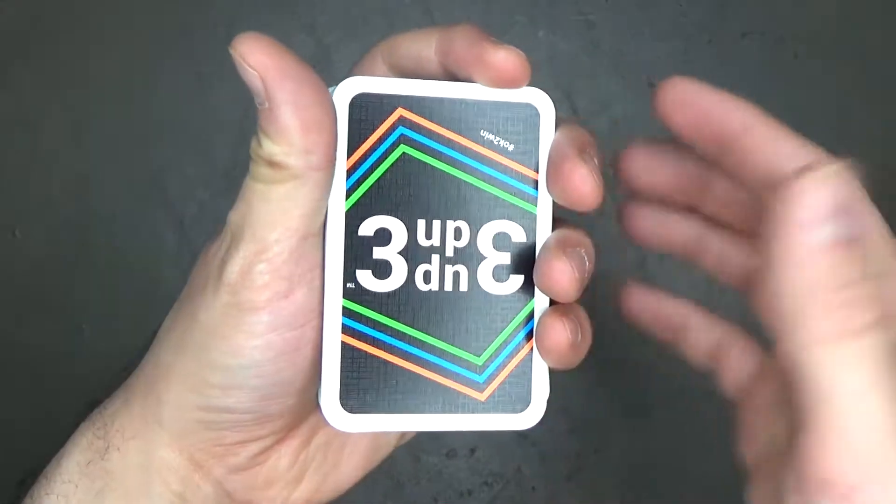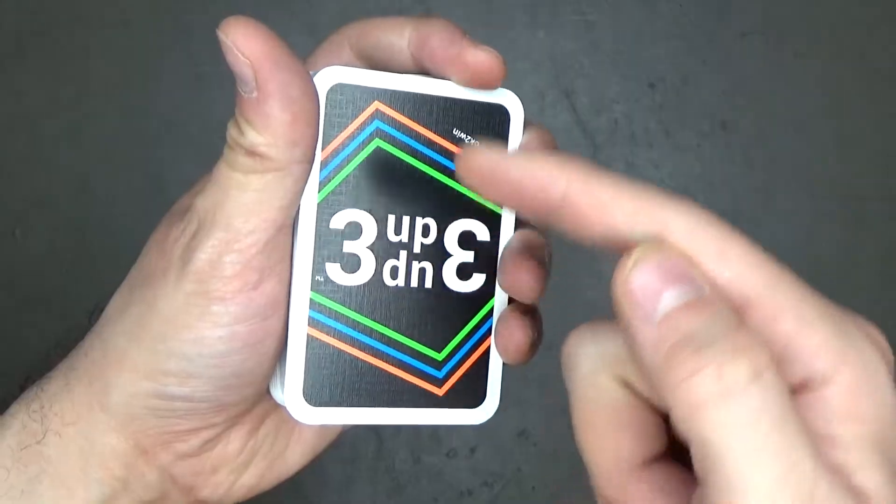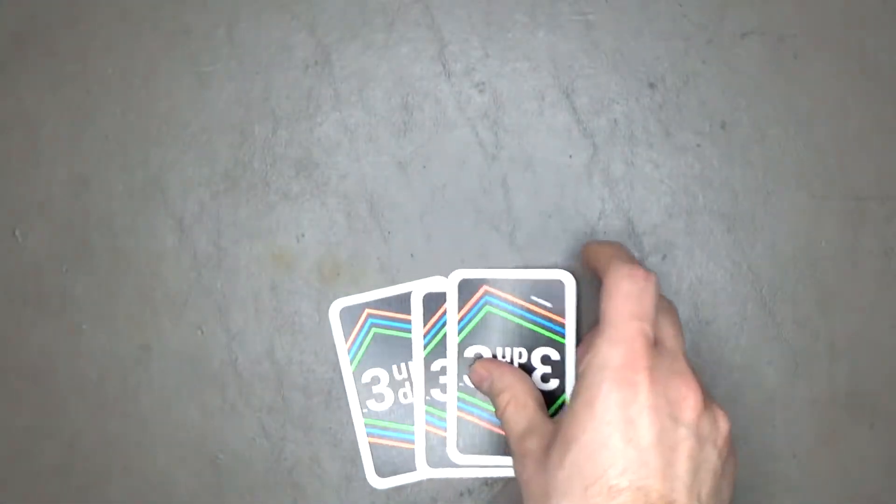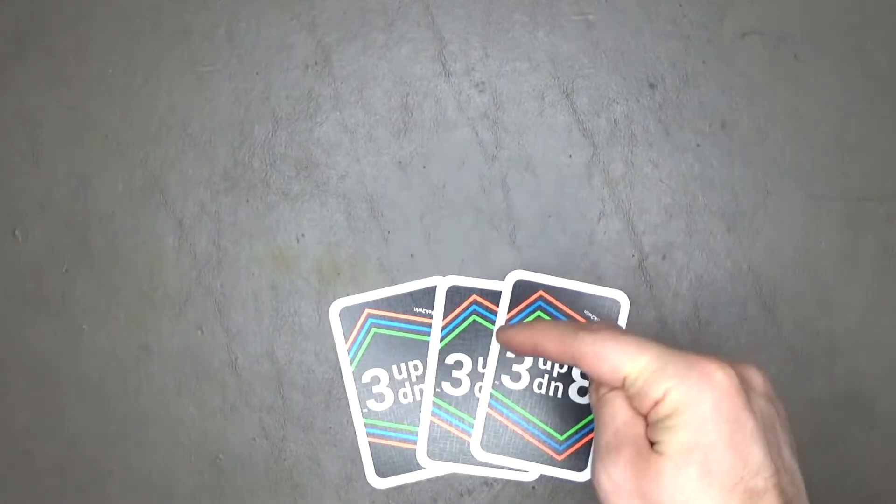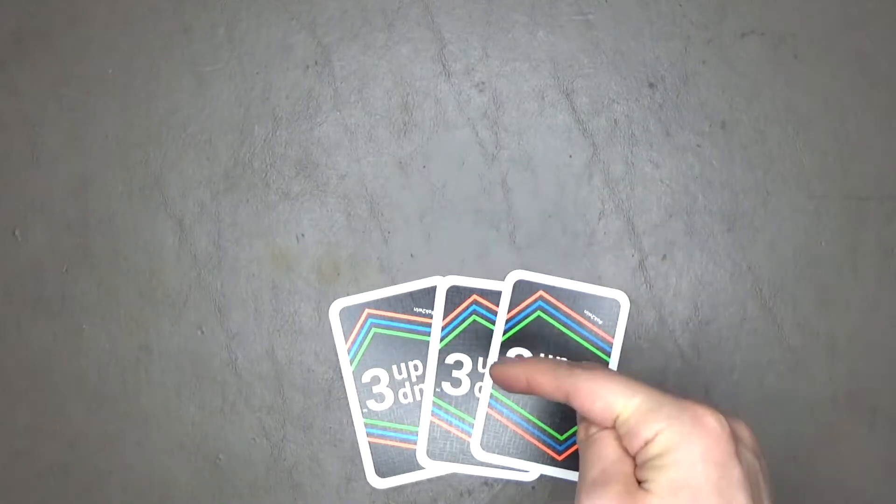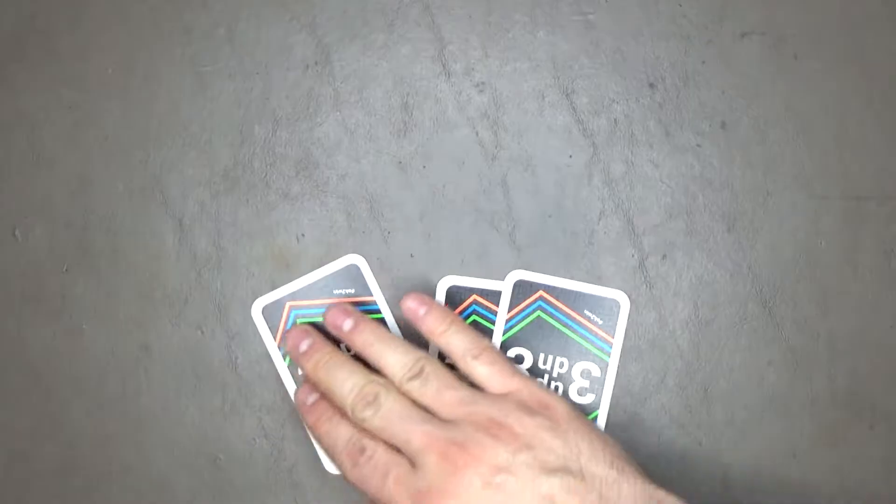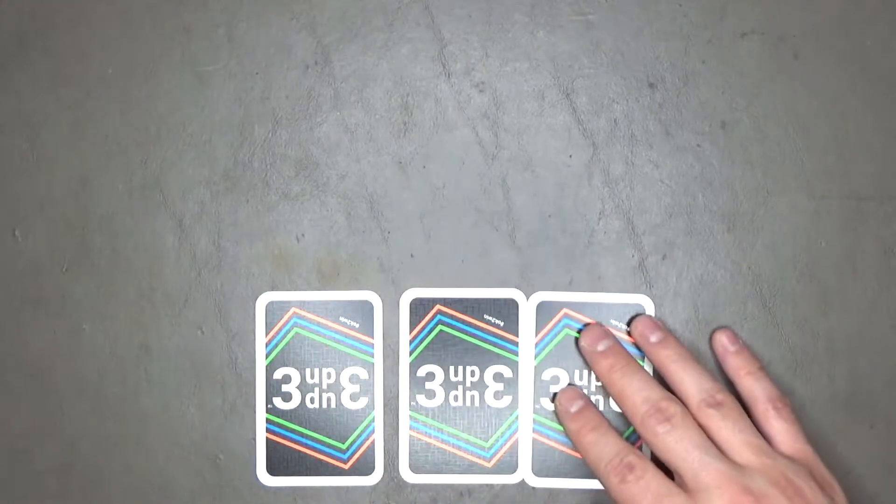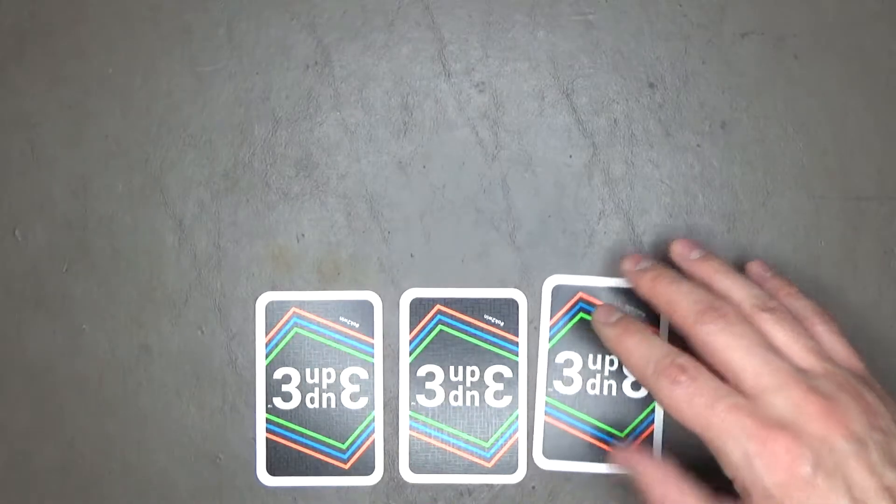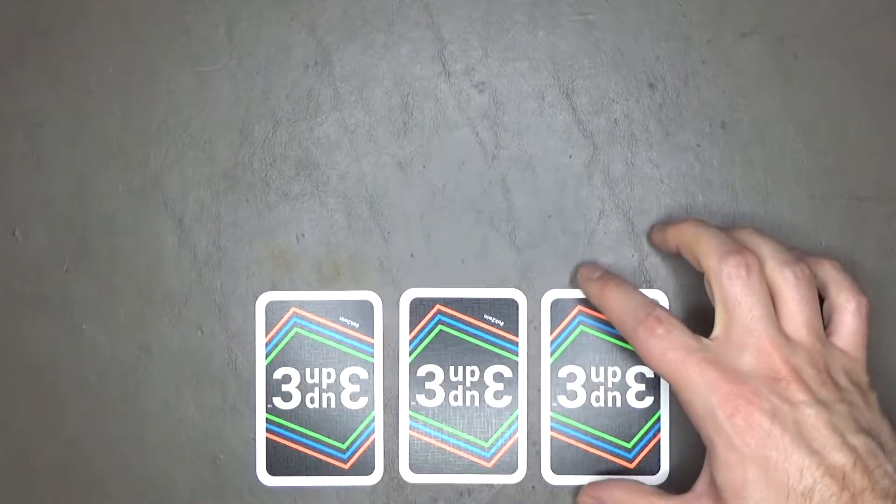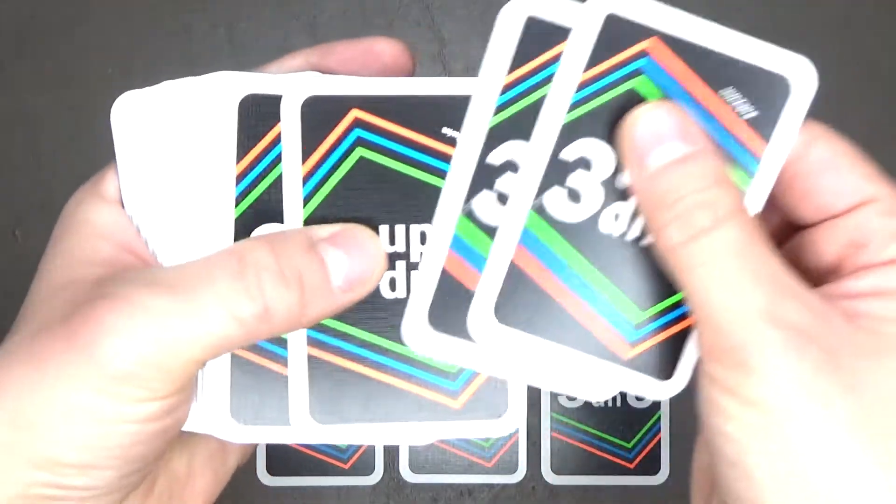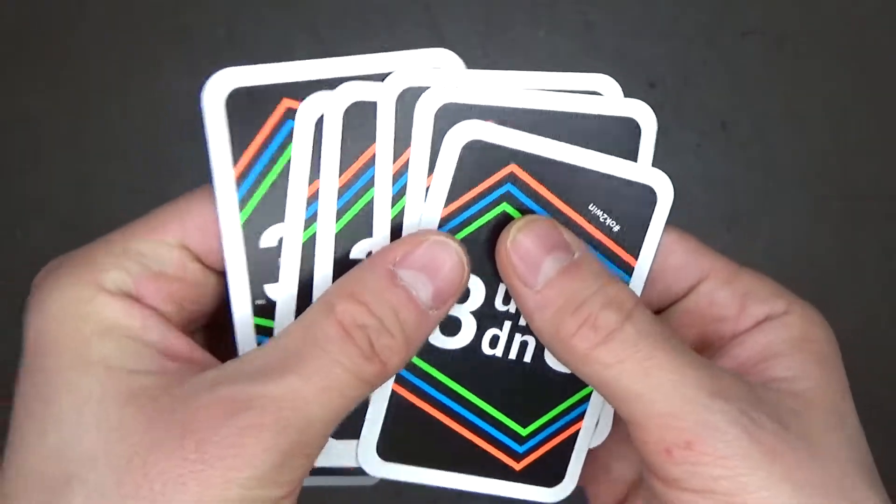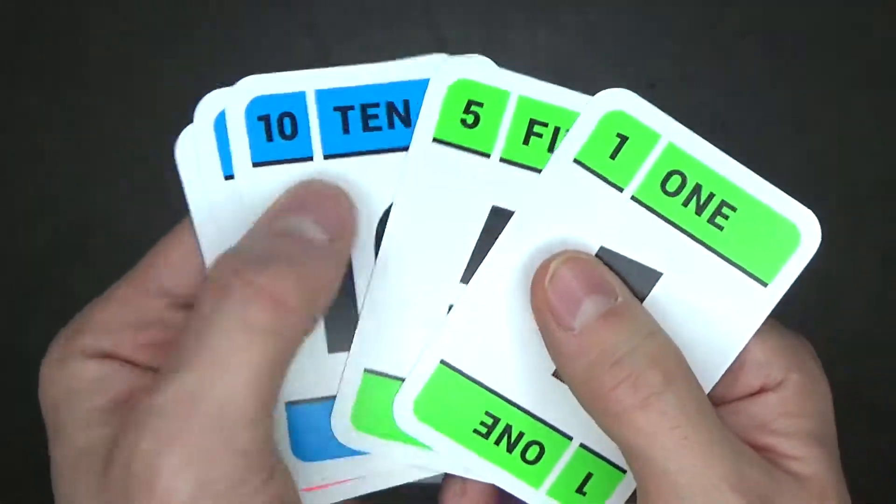To set up the game, elect someone to be the dealer. The dealer shuffles the deck and deals 3 cards to each player face down. No player looks at any of these face down cards. Each player rearranges their face down cards in any order that they want shown like this. Just remember, don't look. Then the dealer is going to deal out 6 more cards to each player. Each player can look at their own cards, just no one else's.